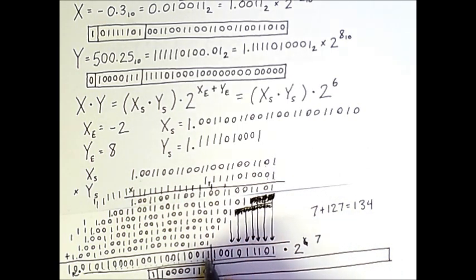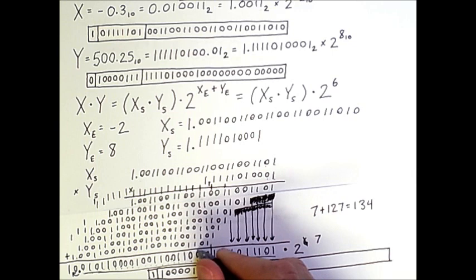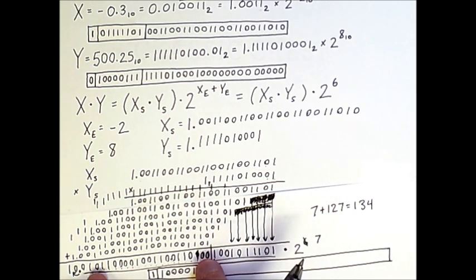But because there is a 1 here, we have to round up. So this 1 becomes a 0, carry the 1 again. That becomes a 0, carry the 1 again. Put a 1 in this position. So these 23 bits will go here, starting from this position.